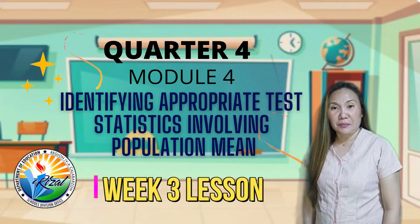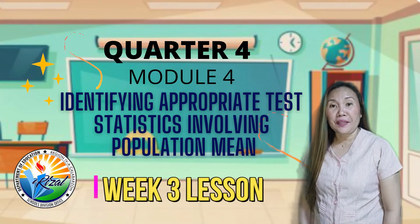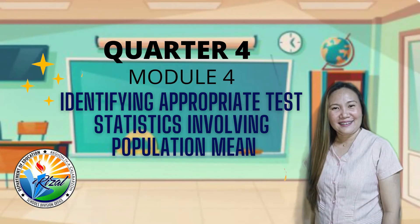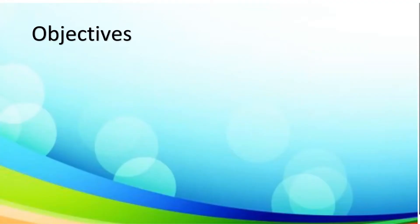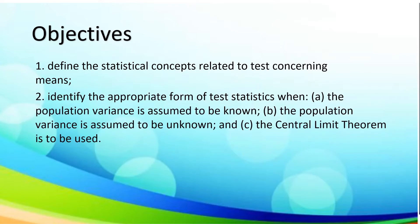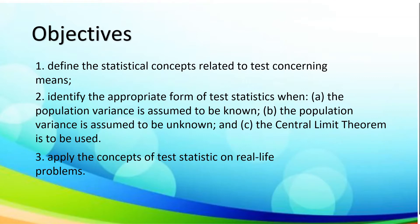Our lesson for the day is all about Identifying Appropriate Test Statistic Involving Population Mean. Our objectives are: define the statistical concepts related to test-constructing means; identify the appropriate form of test statistics when the population variance is assumed to be known, when the population variance is assumed to be unknown, and when the central limit theorem is to be used; and lastly, apply the concepts of test statistic on real-life problems.